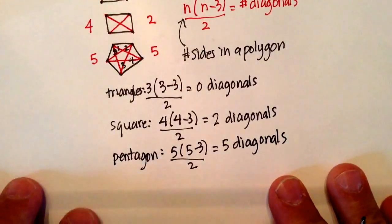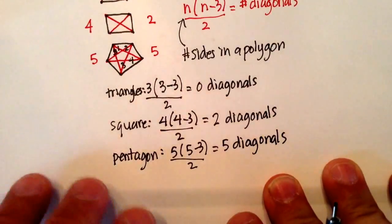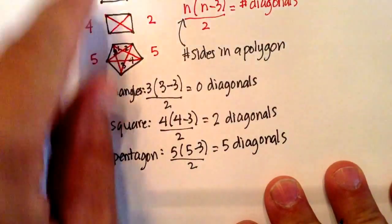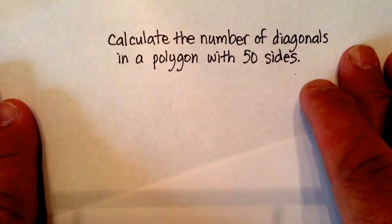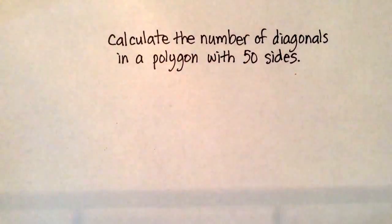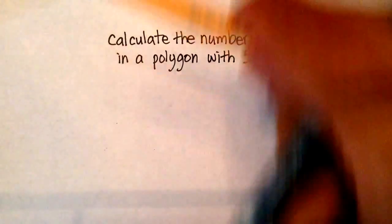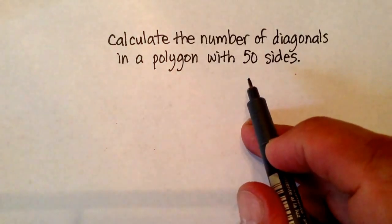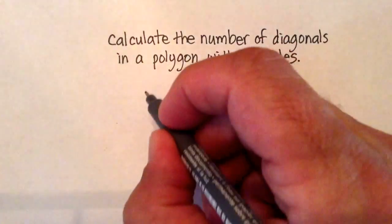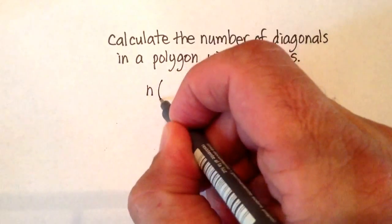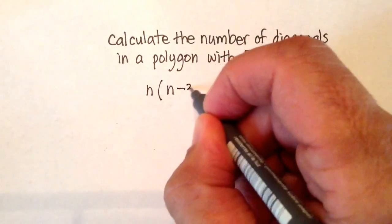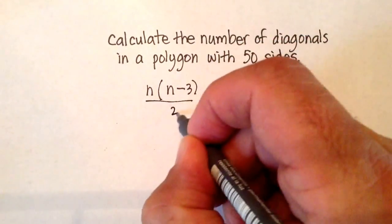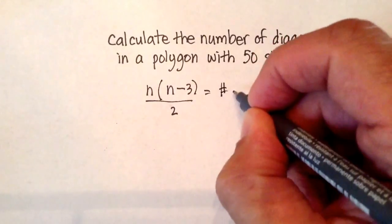So now let's try a problem that's pretty large, something that you couldn't really just count out and see it easily. So what I want to do is give you this problem here. I would like you to calculate the number of diagonals that exist in a polygon with 50 sides. Now, this would be very impractical to draw, wouldn't it? But with our formula, we can be reasonably sure that it would work. So, again, the formula: number of sides times, in parentheses, the number of sides minus 3 over 2 equals the number of diagonals.